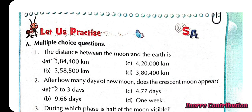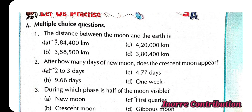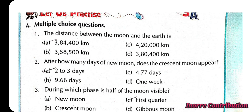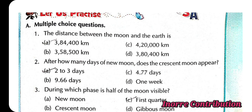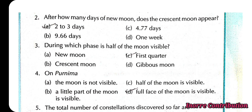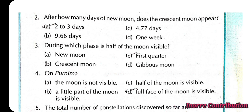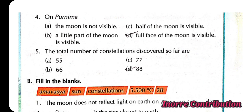Let us practice. Multiple choice questions. First, the distance between the moon and the Earth is Option A: 3,84,400 km. Second, after how many days of new moon does the crescent moon appear? Option A: 2 to 3 days. Third, during which phase is half of the moon visible? Option C: First quarter. Fourth, on Purnima, Option D: full face of the moon is visible. Fifth, the total number of constellations discovered so far are 88.